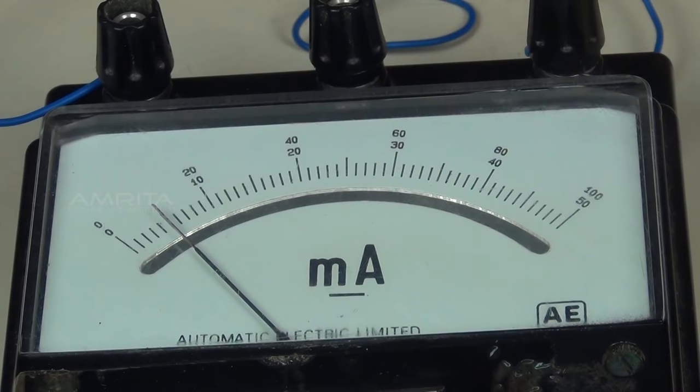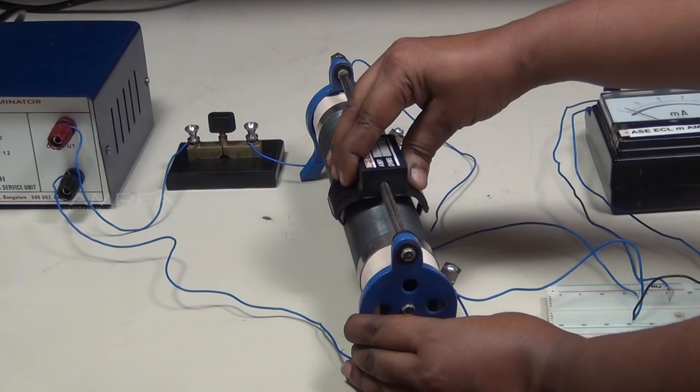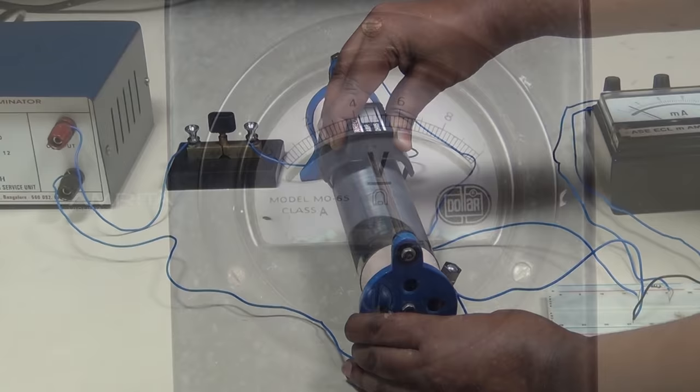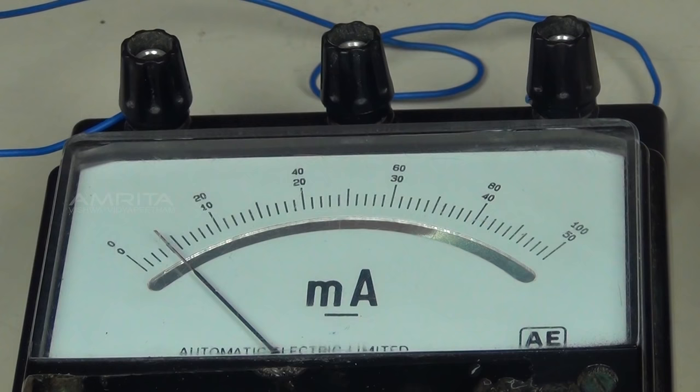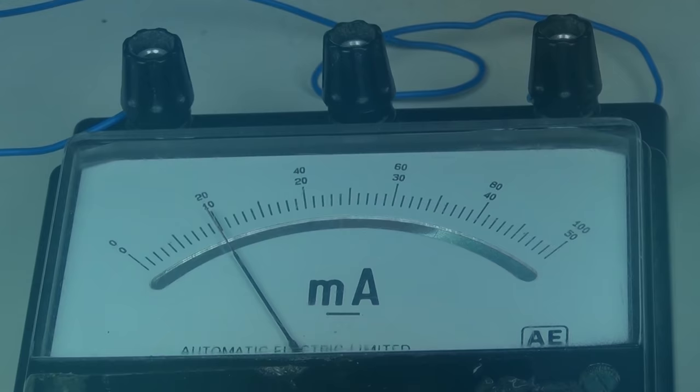As the reverse voltage applied to the Zener diode increases, it reaches the breakdown voltage at which Zener current increases to a large value. In the breakdown region, further increase in reverse voltage will not increase the voltage across the Zener diode, it only increases the current.